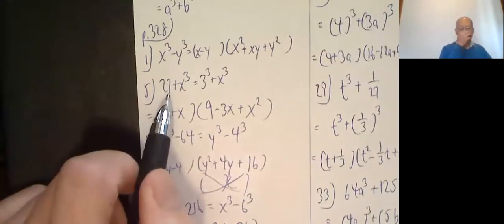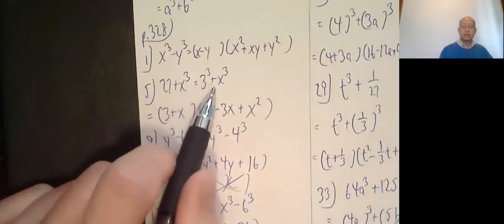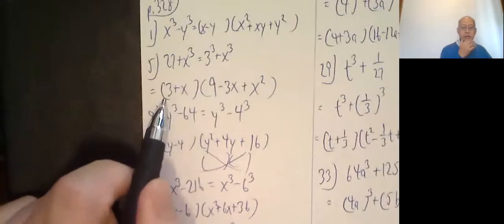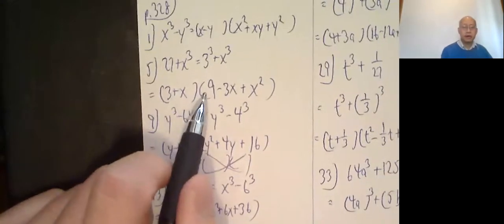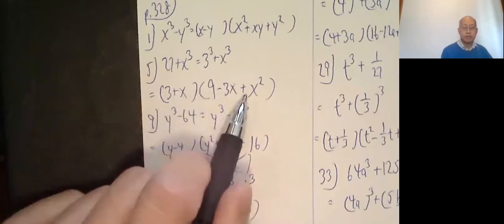Number five, 27 plus x cubed. So 27 is 3 cubed. So it's 3 cubed plus x cubed. Then I use the formula for the sum of two cubes. 3 plus x, 3 squared which is 9, minus the product of these two, 3x plus x squared.